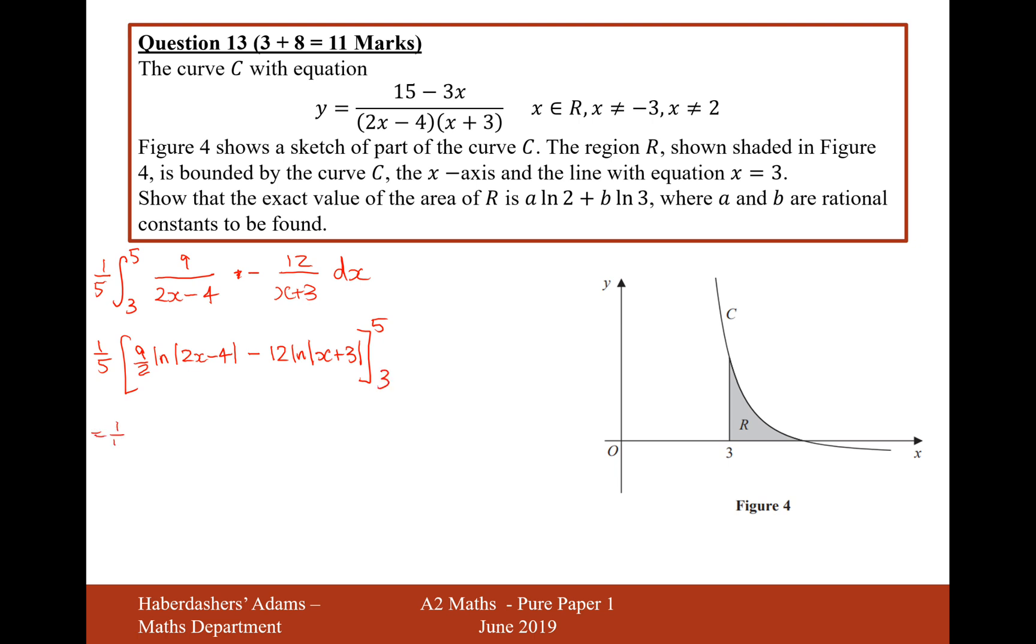We'll leave that 5th at the front still and substitute in 5 and 3. So it's going to be 9 over 2 ln, 5 substitutes 10 minus 4 is 6, and then it's going to be minus 12 ln, 5 plus 3 is 8. So that's the first bit, and then we have minus 3 substituting in, so that would be 9 over 2 ln 6 minus 4 is 2 minus 12 ln 6.